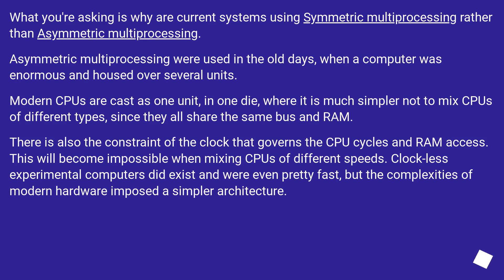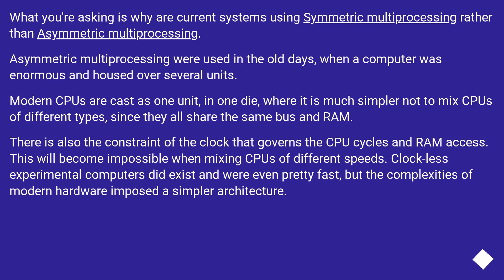What you're asking is why current systems use symmetric multiprocessing rather than asymmetric multiprocessing. Asymmetric multiprocessing was used in the old days when a computer was enormous and housed over several units. Modern CPUs are cast as one unit, in one die, where it is much simpler not to mix CPUs of different types, since they all share the same bus and RAM. There is also the constraint of the clock that governs the CPU cycles and RAM access, which will become impossible when mixing CPUs of different speeds.